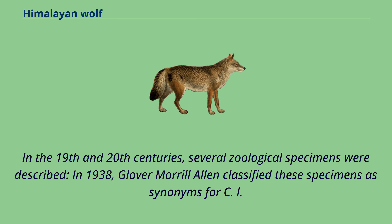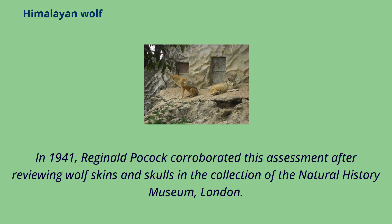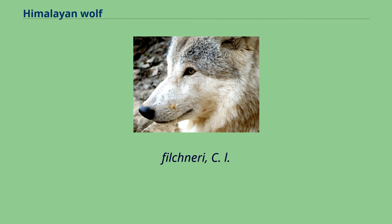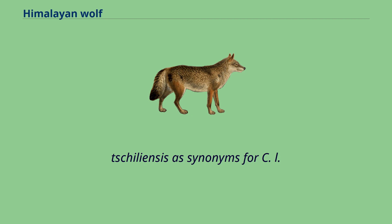In 1941, Reginald Pocock corroborated this assessment after reviewing wolf skins and skulls in the collection of the Natural History Museum, London. In 2005, W. Christopher Wozencraft also listed Canis lupus niger, Canis lupus filchneri, Canis lupus karanensis, and Canis lupus chiliensis as synonyms for Canis lupus chanco.